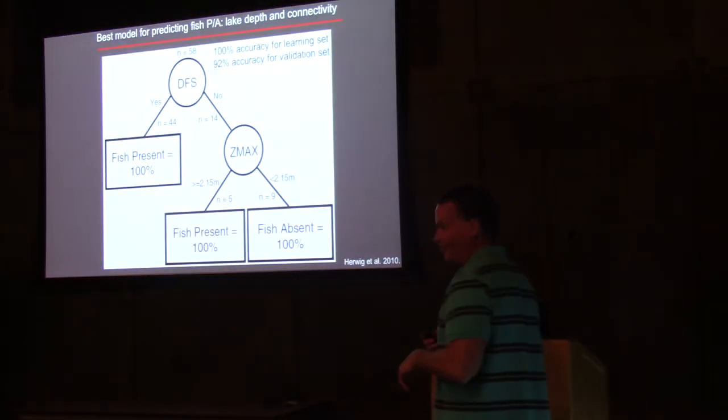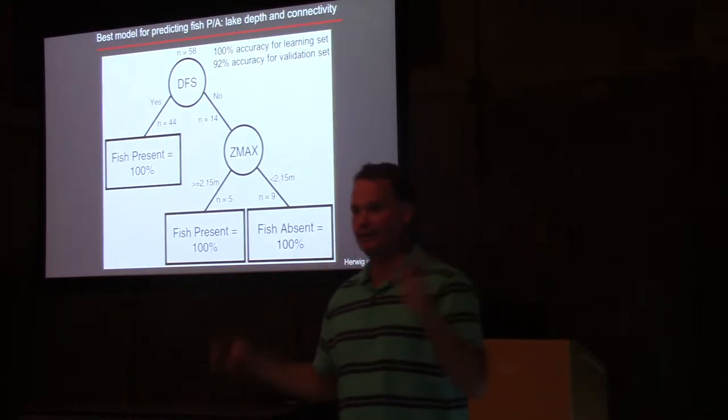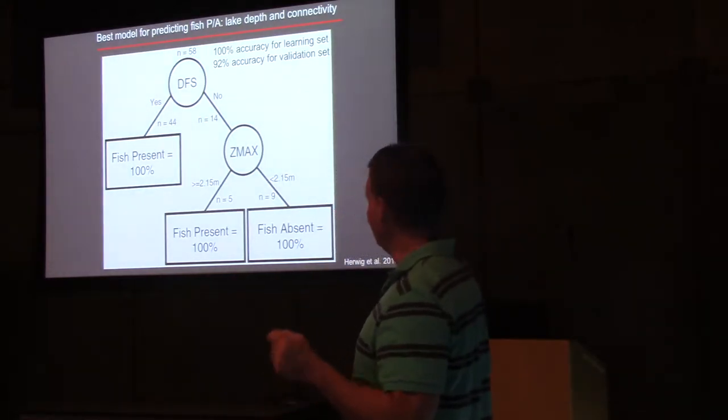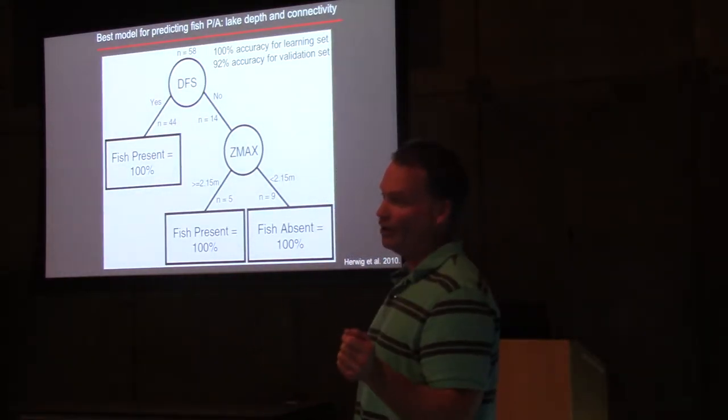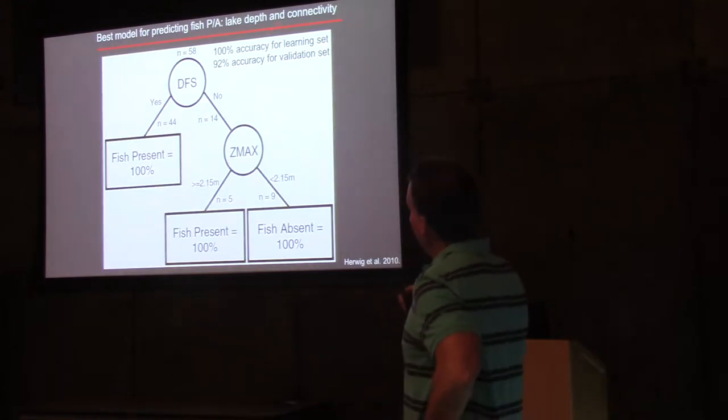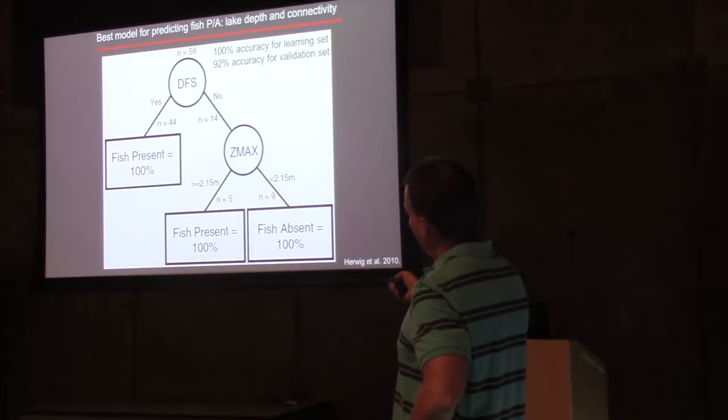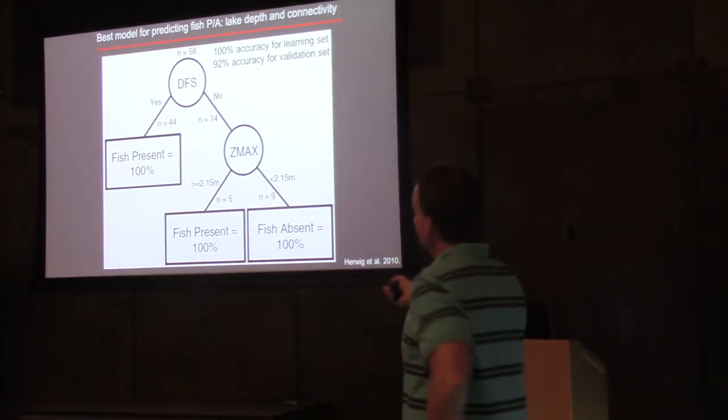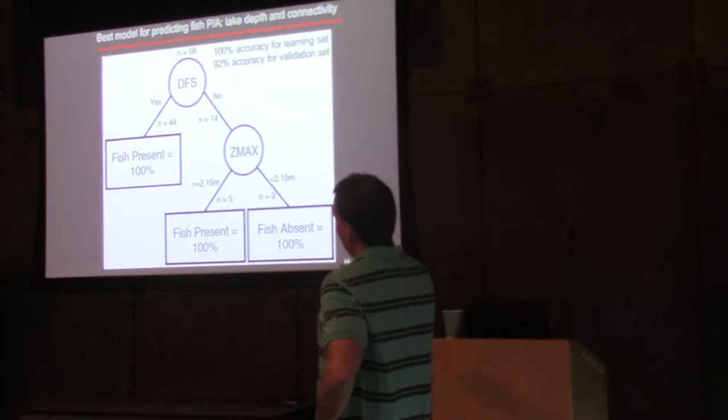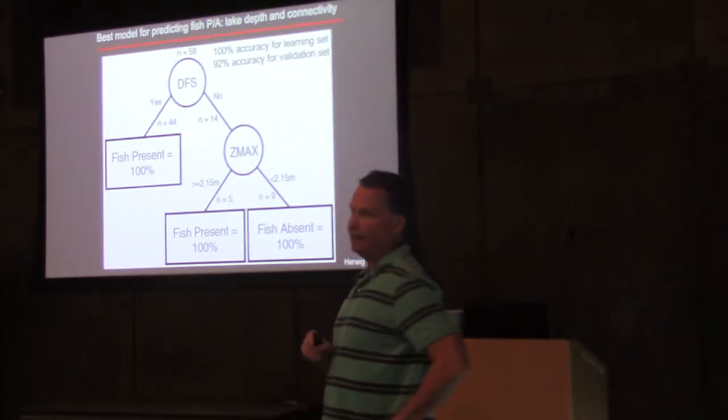We were actually pretty surprised at our results. We thought this would be a mess, it would be complex, we could never do it. We actually were able to predict fish presence or absence really well in a really simple model. It's length, depth, and connectivity. So here's our 58 lakes, our learning set. DFS stands for downstream fish source. This is literally what it does. If the answer to the question is yes, the lake did have a downstream fish source, 24 lakes, boom, every single lake had fish in it.